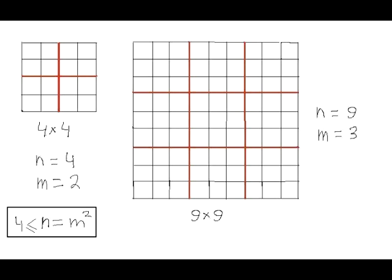This problem appears not to be terribly difficult. One key fact that you need to discover is that certain boards with dimensions n by n, where n is a perfect square, such as 4, 9, 16, etc., play a special role in the solution. The reason is that if n equals m squared, where m is a positive integer, then such boards can be partitioned into m squared congruent square regions, each consisting of m times m unit squares. For example, a 4 by 4 board can be partitioned into 4 congruent square regions each of 2 by 2 unit squares, or a 9 by 9 board into 9 congruent square regions each containing 3 by 3 unit squares.